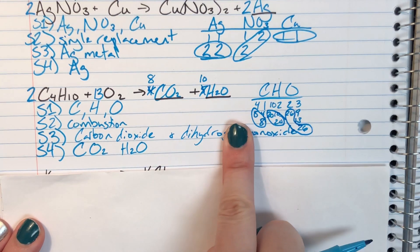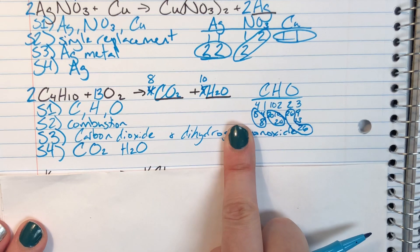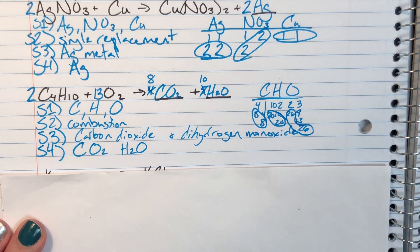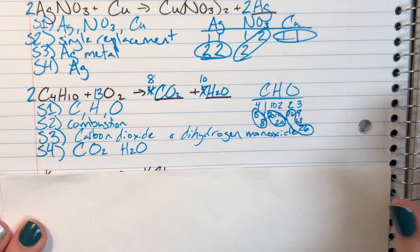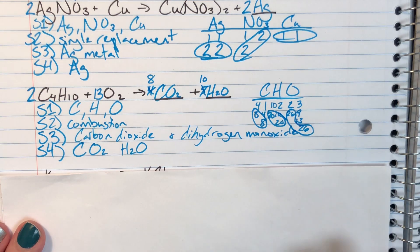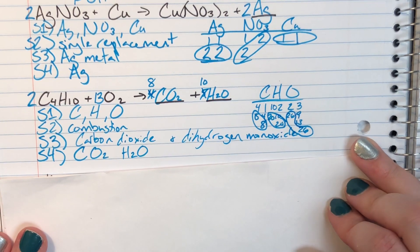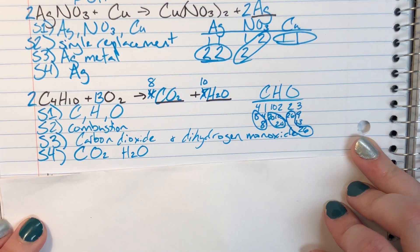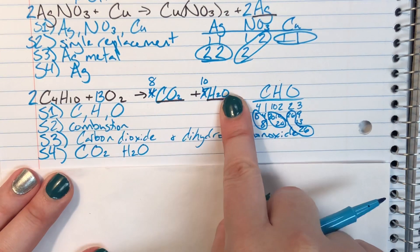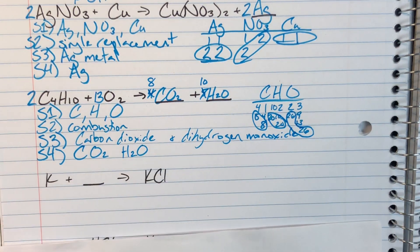Combustion reactions are particularly annoying to balance — just be prepared to keep trying. Doubling the whole equation is a totally valid option that you'll need to use fairly often, so get used to it. Large coefficients like 13 are completely normal and acceptable.